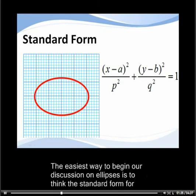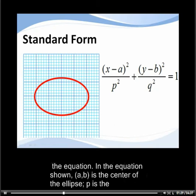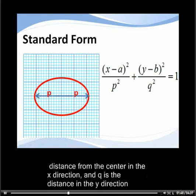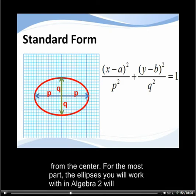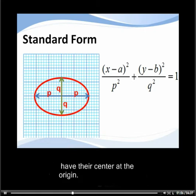The easiest way to begin our discussion on ellipses is to think about the standard form for the equation. In the equation shown, (a,b) is the center of the ellipse, p is the distance from the center in the x direction, and q is the distance in the y direction from the center. For the most part, the ellipses you will work with in Algebra 2 will have their center at the origin.